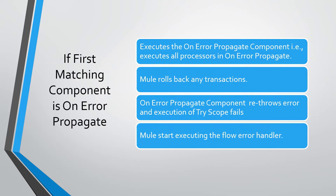If the first matching component is an on-error propagate component, Mule executes all the processors inside it, then rolls back any transactions. The on-error propagate component re-throws the error and execution of the Try Scope fails. Inside the flow, Mule does not execute any component after Try Scope and starts executing the flow error handler.